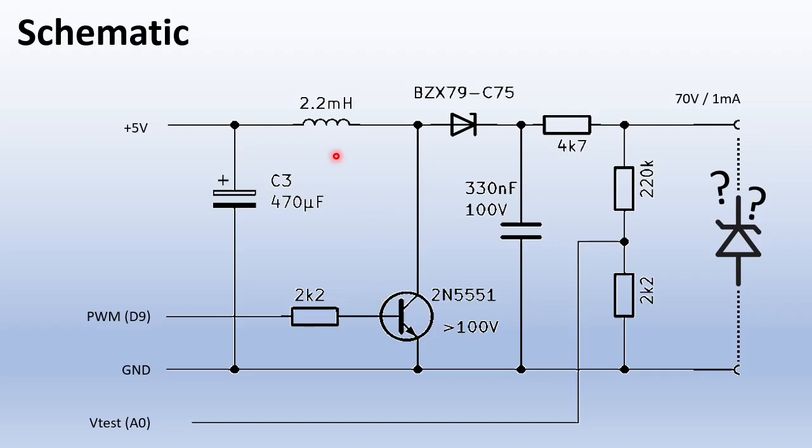Now when the transistor shuts down, the magnetic energy on the choke needs to go somewhere. And the only path it can find is via the diode and the capacitor. This way the capacitor gets charged step by step. If you want to know more about boost converters, check my video about it. I will leave a link in the description.